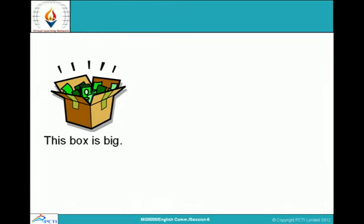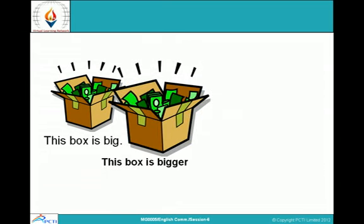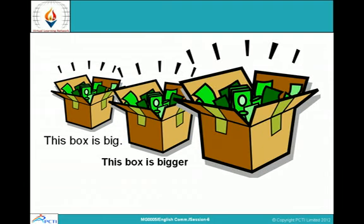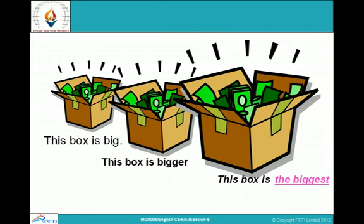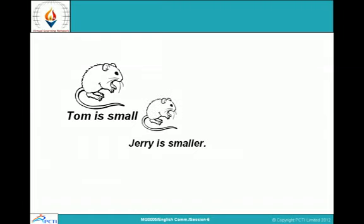Now let us understand what is a superlative. The box is big. This box is bigger. And the superlative form is the biggest — we add -EST. Small: Tom is small, Jenny is smaller, and Tiny is the smallest. This is the superlative form.